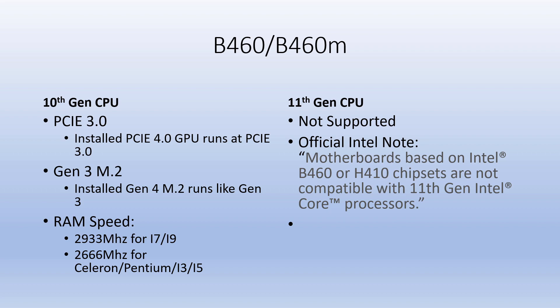With your 10th gen in a B460, you get PCIe 3.0. If you install a PCIe 4.0 GPU it runs at PCIe 3.0. Gen 3 M.2 is what you get — if you run a Gen 4 M.2 it's going to run like Gen 3. Max RAM speed you're going to achieve with the B460 is 2933 MHz for i7 and i9, assuming you have RAM that can hit those speeds.